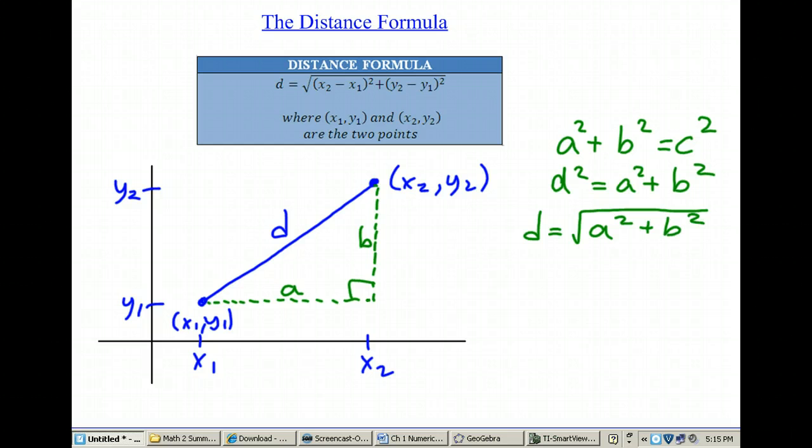Now what is that distance of a and b? So a, if you look at the distance between x1 and x2, just subtracting x2 minus x1 will tell us that distance for a. And then for b, it's just this distance here between y2 and y1.